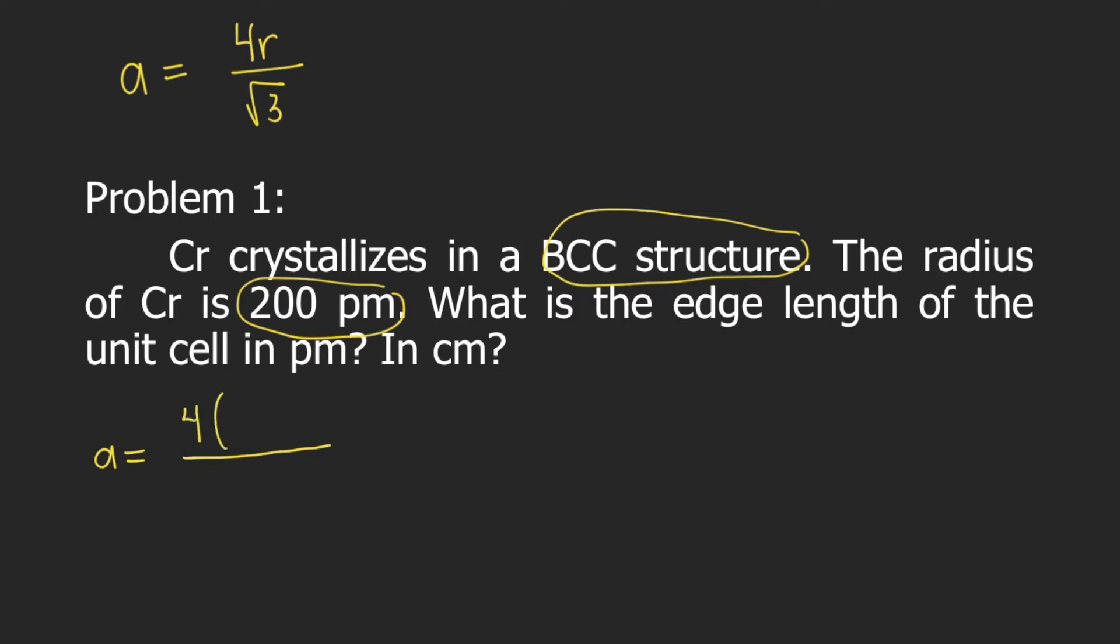So 4 times 200 picometers divided by square root of 3. Grab your calculator and type these numbers, and you will get the answer 462 picometers. So this is the edge length of the unit cell in picometers.